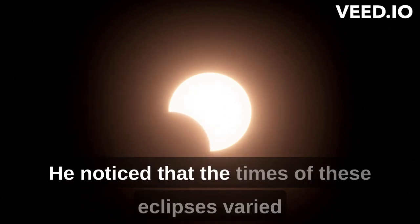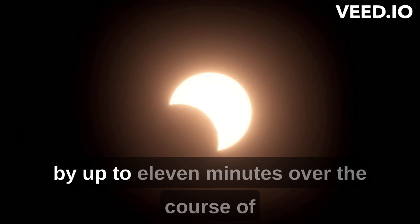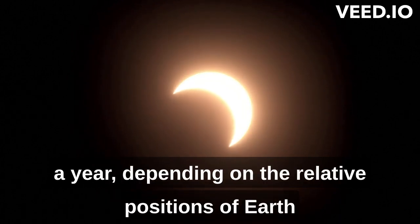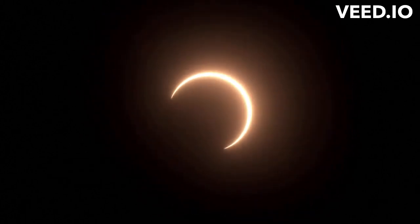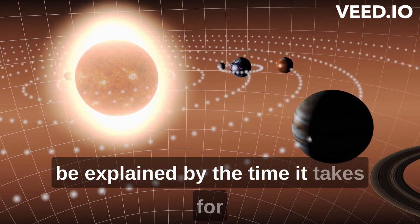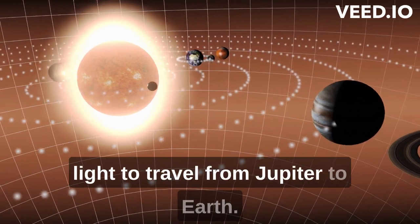He noticed that the times of these eclipses varied by up to 11 minutes over the course of a year, depending on the relative positions of Earth and Jupiter in their orbits around the Sun. Roemer realized that this variation in timing could be explained by the time it takes for light to travel from Jupiter to Earth.